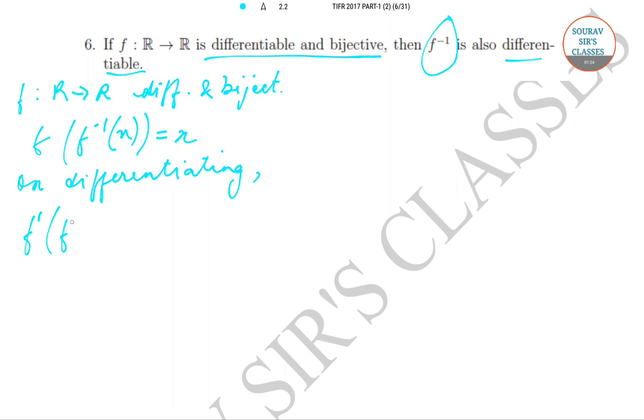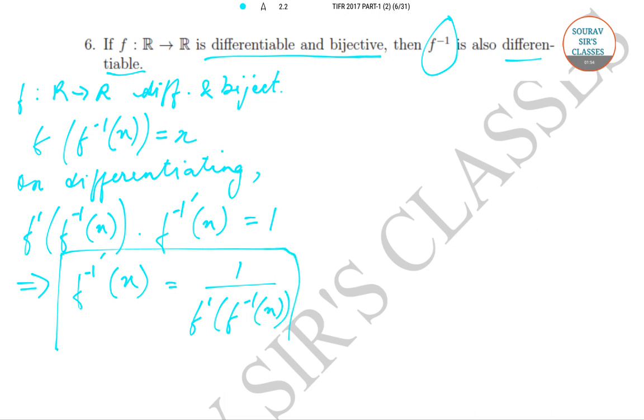On differentiating, we can write f dash of f inverse x into f inverse dash x is equal to 1. And we can write f inverse dash x is equal to 1 by f dash f inverse x. This is a particular relationship that we'll be using to find out whether f inverse is also differentiable.